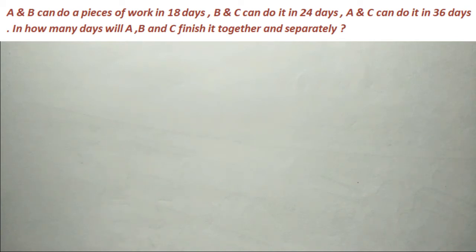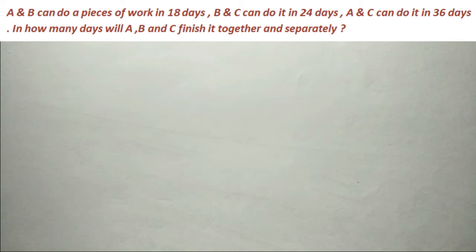Next question: A and B can do a piece of work in 18 days. B and C can do it in 24 days. A and C can do it in 36 days. In how many days will A, B, and C finish it together and separately?